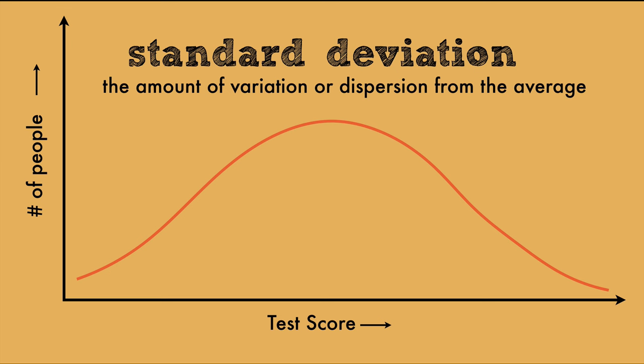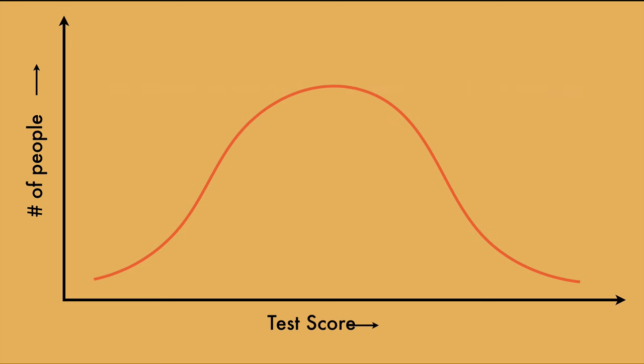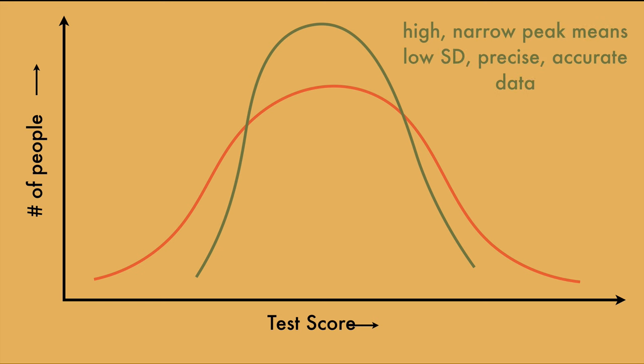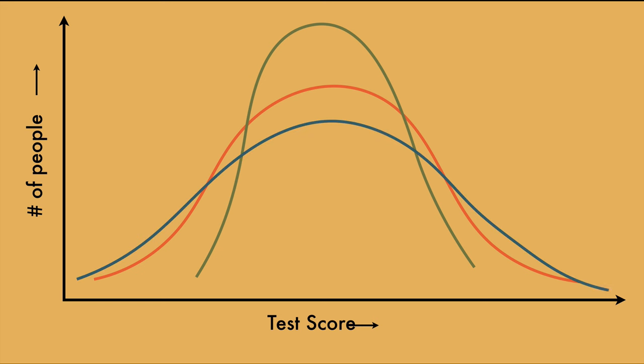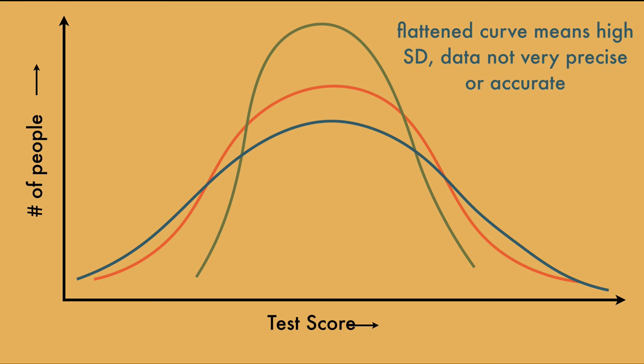So let's look at the bell curve again, and think about why it's helpful to understand standard deviation. Here's a normal curve in orange. A curve with a high, narrow peak has a low standard deviation, which means that the data is very precise and accurate. A curve with a flattened peak has a high standard deviation, and that means that the data is not very precise or accurate. This can help you analyze the quality of your data.